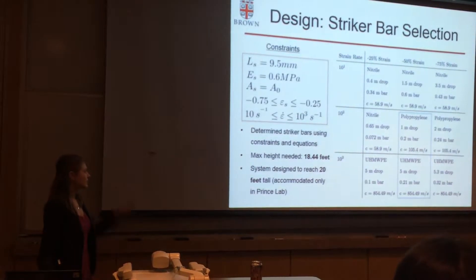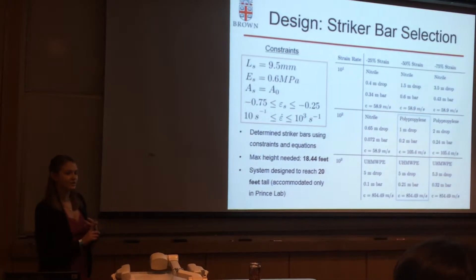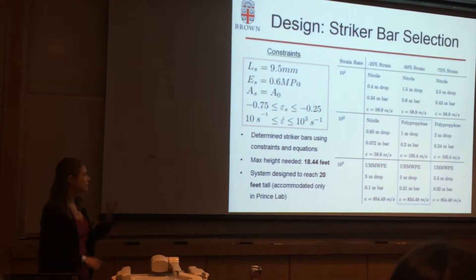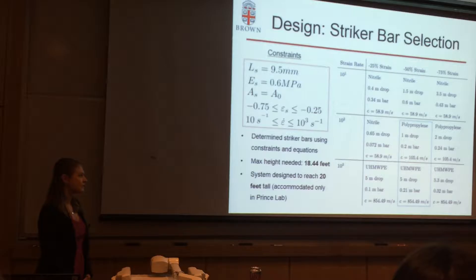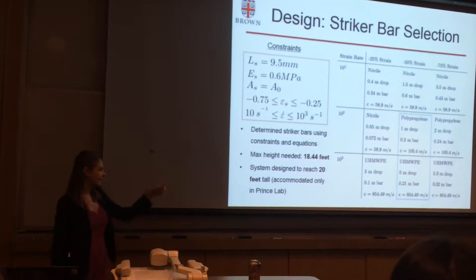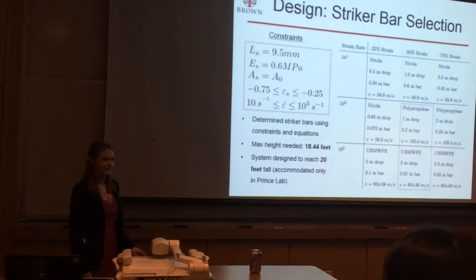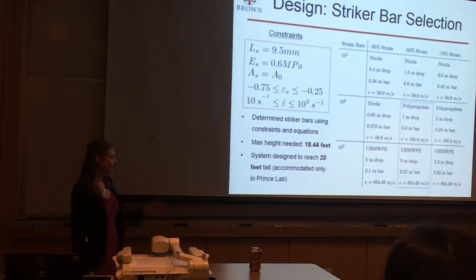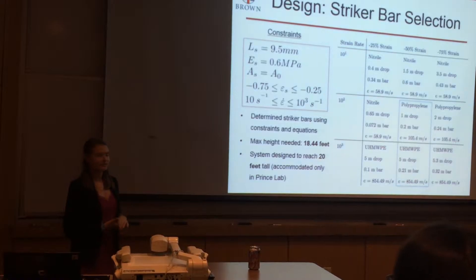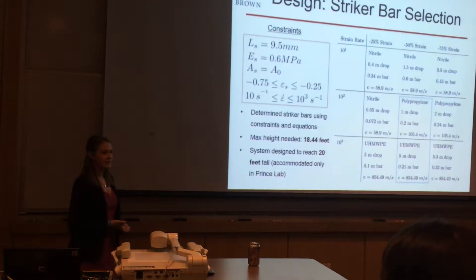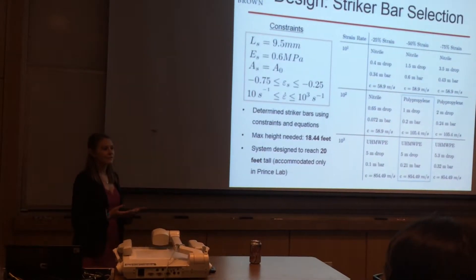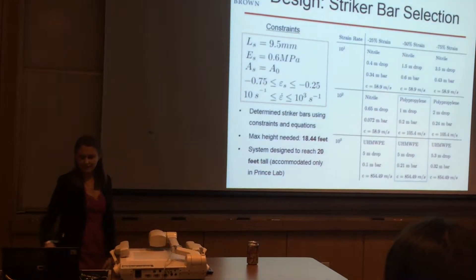Using all this information I got combinations of drop bars and drop heights to use for the desired strain and strain rate combinations and in my testing I utilized the two bars in the blue box but the overall greatest height needed was 18.44 feet that's the drop height plus the length of the bar so the system was designed to reach approximately 20 feet therefore it needed to be located in Prince lab to accommodate this height.